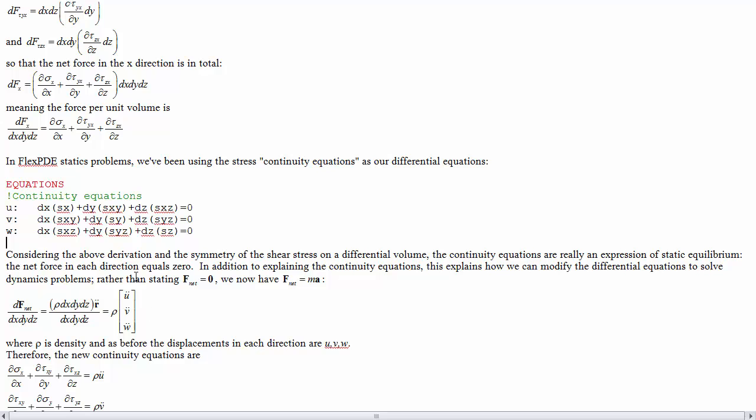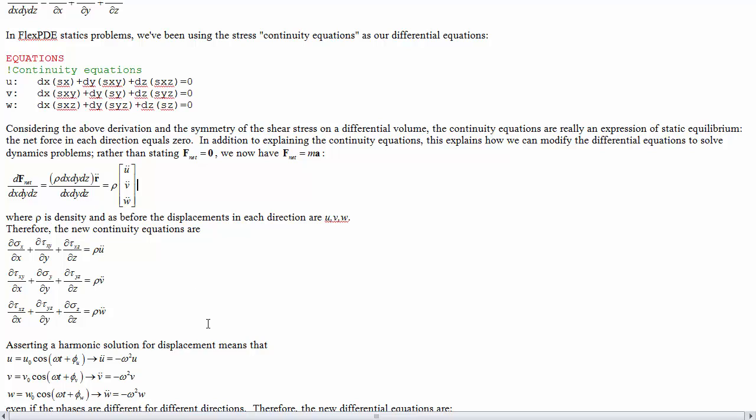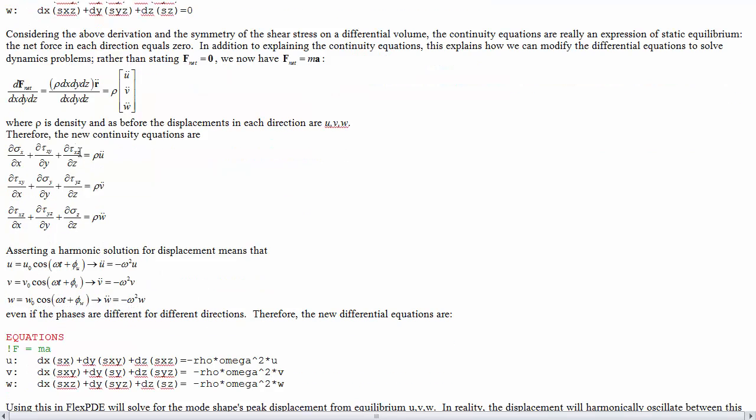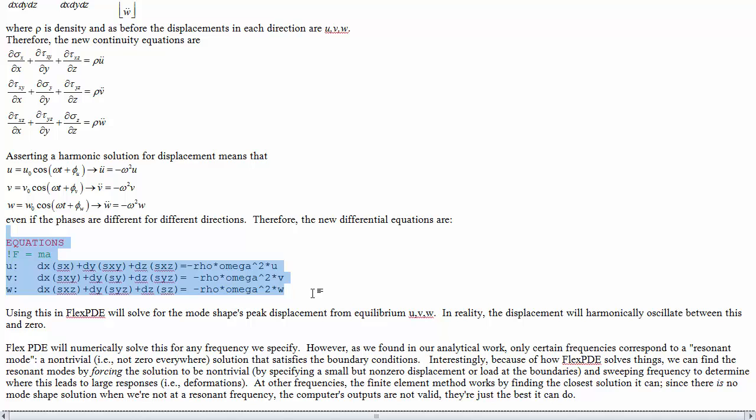For beam dynamics, all we do, instead of saying that the net force per unit volume is equal to zero, we'll say the net force is mass times acceleration, which per unit volume would be density times the second time derivative of each of the displacements. If we're searching for harmonic solutions, then the second time derivative of the displacement in the x-direction is going to be equal to negative omega squared times the displacement in the x-direction, and similarly in the y and z-direction. The differential equations we have to solve are: rather than setting these equal to zero, we set them equal to negative the density times the square of some omega multiplied by the displacement in that direction.